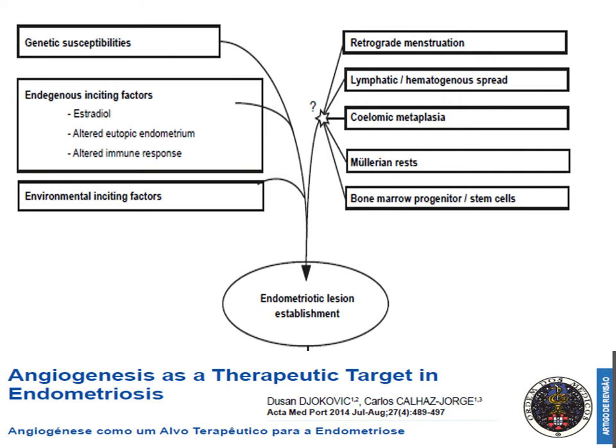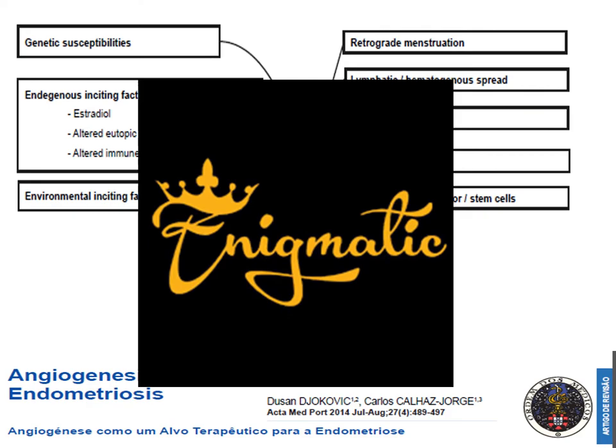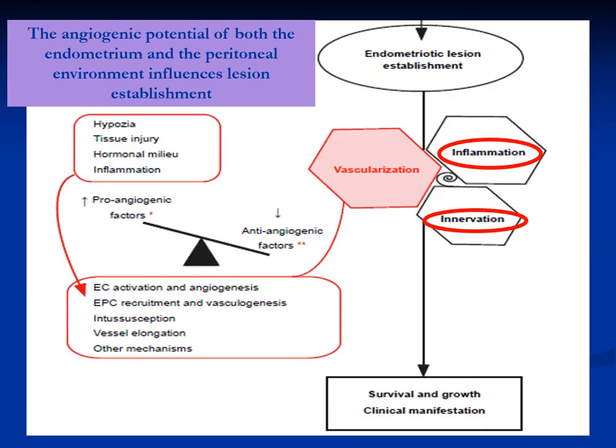Whatever may be the theory explaining the occurrence of endometriosis, all of us know that there is no universally accepted theory that may explain all cases of endometriosis. That's why this disease is still known as an enigmatic disease of medicine. If you see endometriosis by laparoscopy, you will see that this disease is associated with inflammation, defective vasculature, and defective innervation, and these can be proved by immunohistochemical and histopathologic studies of the endometriotic lesions.